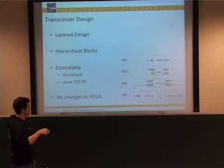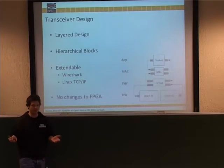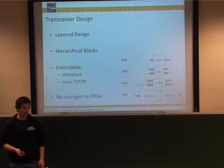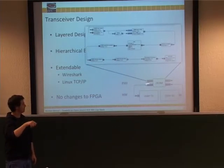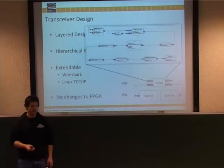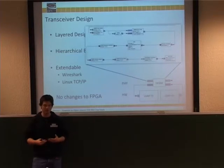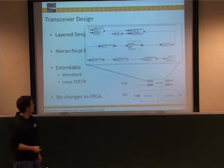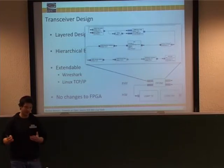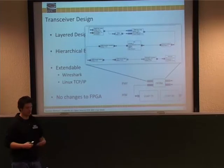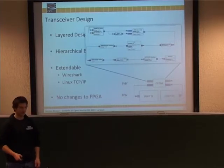I started implementing the 11p transceiver. I built it in a very layered architecture, because computer scientists are used to the layered communication stack — you may know the ISO/OSI model. At the bottom you have the hardware, then the physical layer, then MAC stuff for adding MAC addresses, and then an interface to connect and insert data into the flow graph. I also use hierarchical blocks: the whole OFDM transceiver is hidden inside the physical layer block. I developed this while Martin was working on the OFDM implementation.